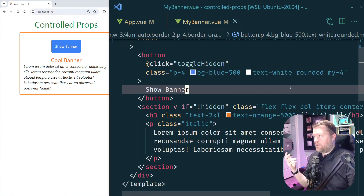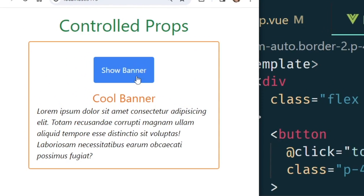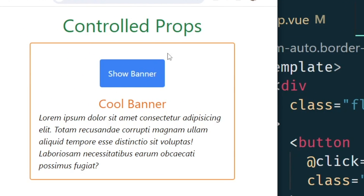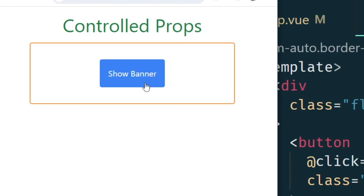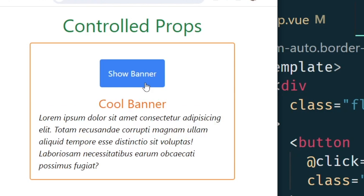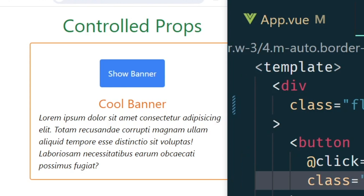Here I have this button — this is a child component, everything inside here is a child component. If I click 'Show Banner' the text disappears, and if I hit it again it shows the banner with this lorem ipsum text.